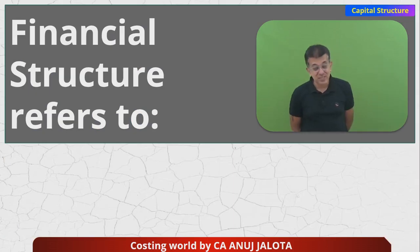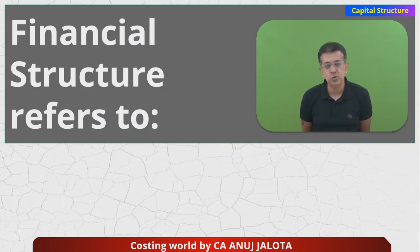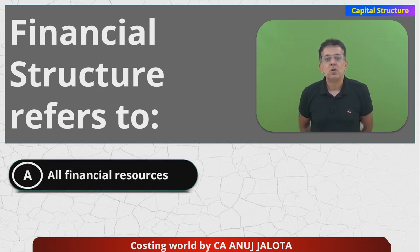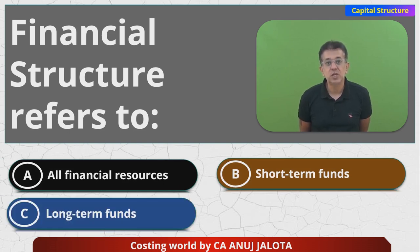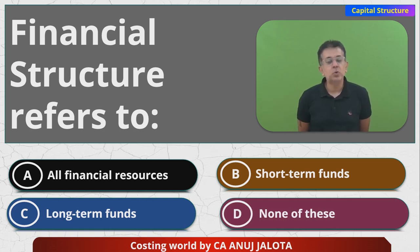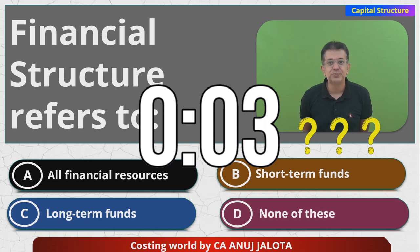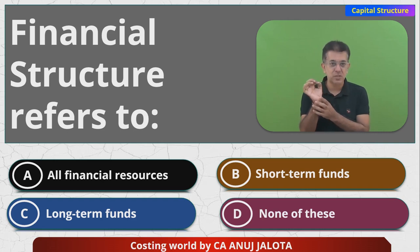Let's do the question for today. There's a chapter called Capital Structure, and in that there is a certain word called Financial Structure. The question asks: Financial Structure refers to — bring me the four options — A: all financial resources, B: short term funds, C: long term funds, and D: none of these. Before I answer, if you know the answer, kindly comment below.